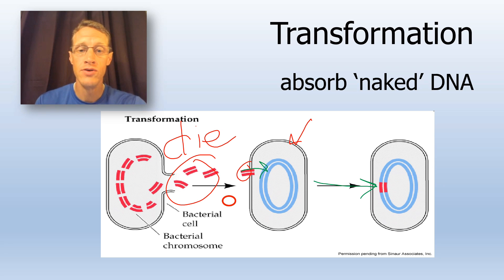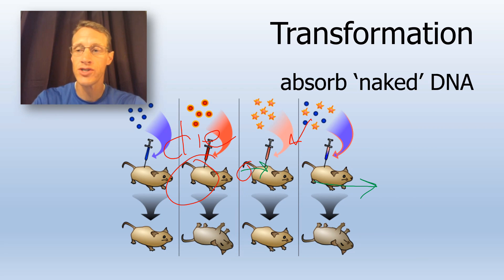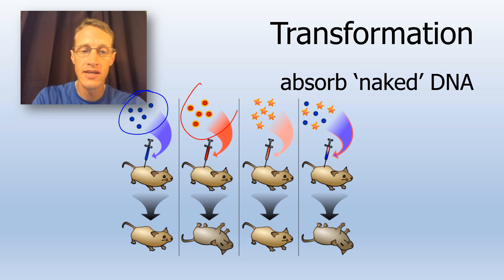You may recall that transformation was first shown by Frederick Griffith, who worked with two different strains of pneumonia bacteria. He had this harmless strain that didn't cause the disease and this more deadly harmful one that did.